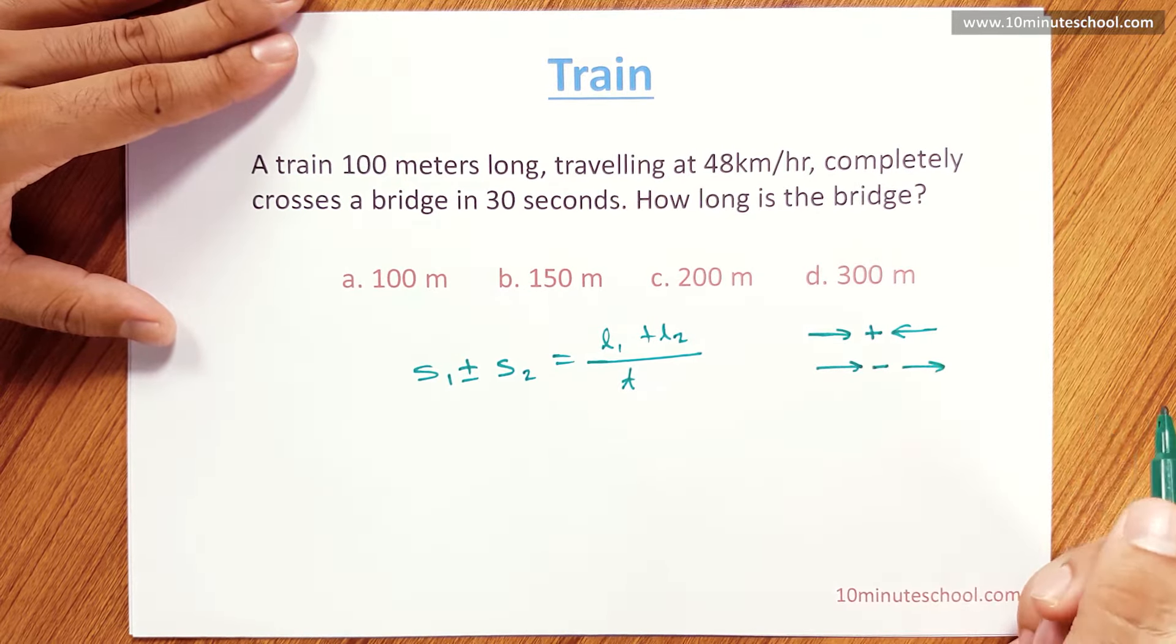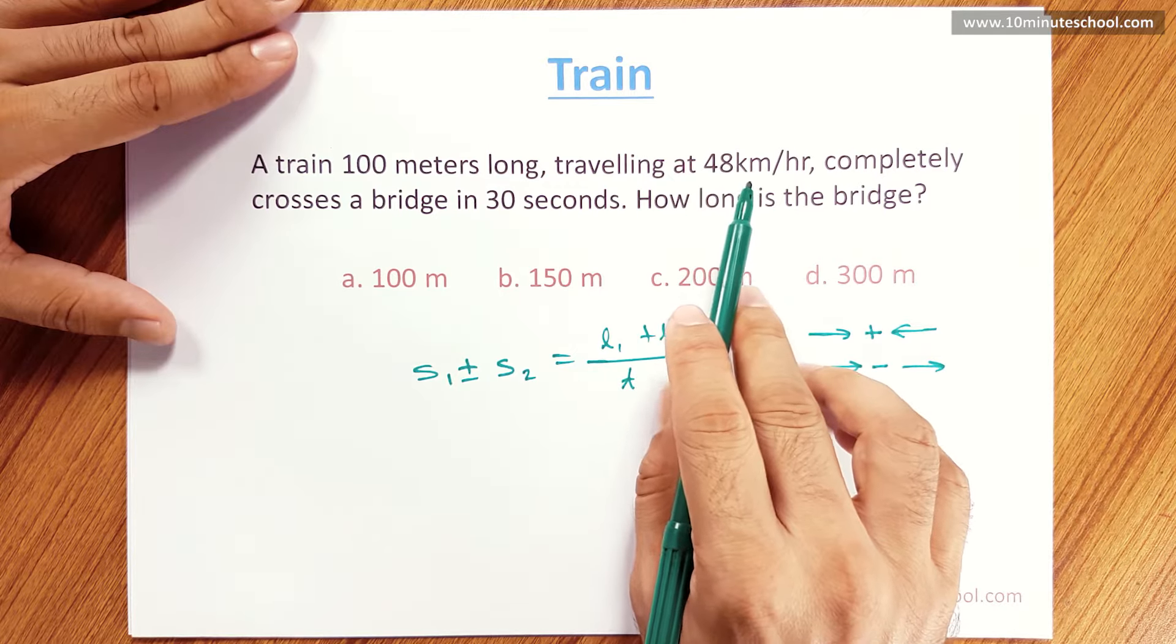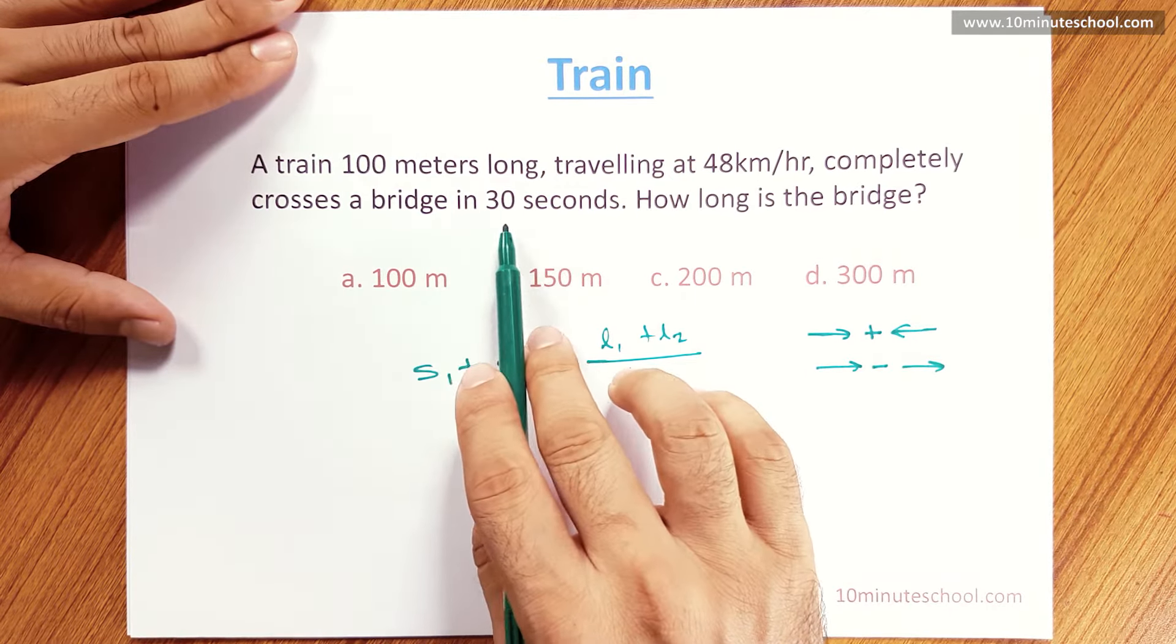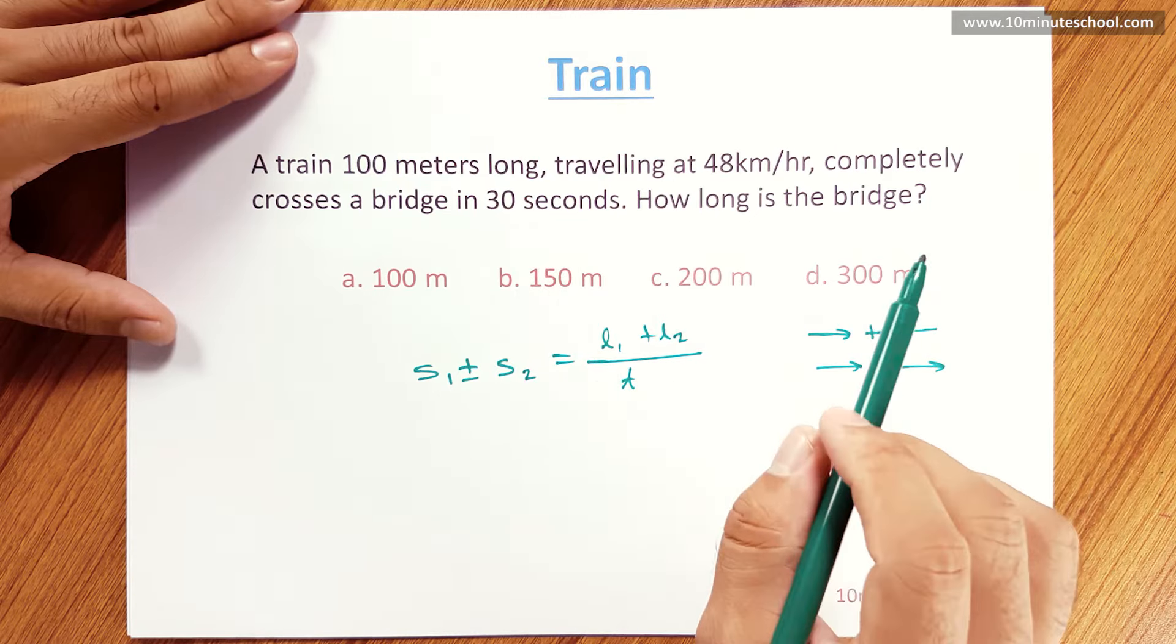A train is 100 meters long, traveling at 48 km per hour. It completely crosses the bridge in 30 seconds. How long is the bridge?